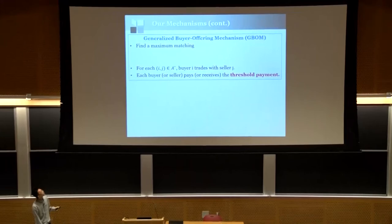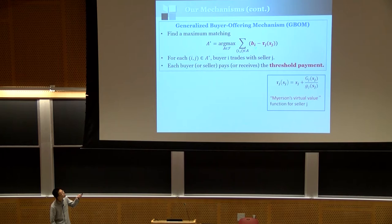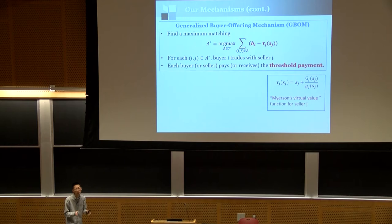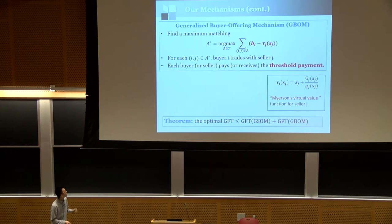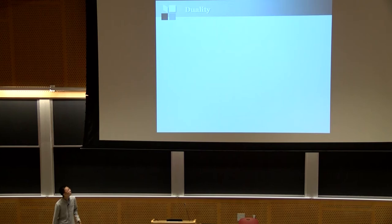The second mechanism is the Buyer Offering Mechanism for double auctions. The only difference is that the edge weight is now the buyer's true value minus the seller's virtual value, where τ is the Myerson virtual value for the seller — analogous but symmetric to the first mechanism. Everything else proceeds similarly, and we prove that the optimal gains from trade is upper bounded by the sum of the gains from trade of these two mechanisms.